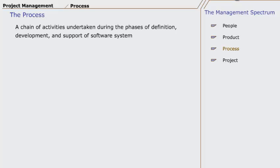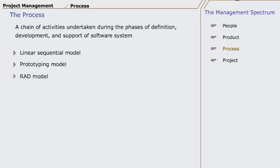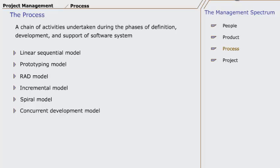The problem is to select the process model that is appropriate for the software to be engineered by a project team. There are several approaches to software development process, also referred to as software engineering paradigms or models. A few of them are: the linear sequential model, the prototyping model, the RAD model, the incremental model, the spiral model, and the concurrent development model.